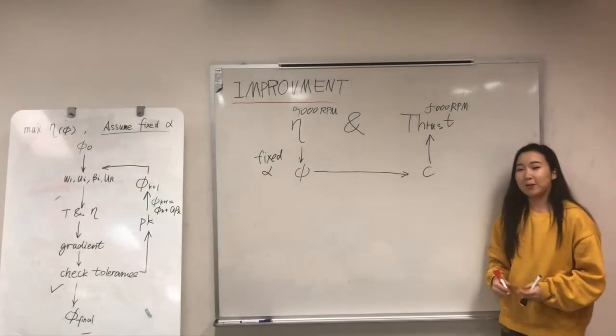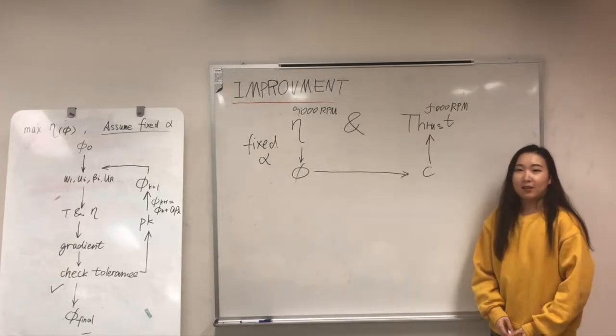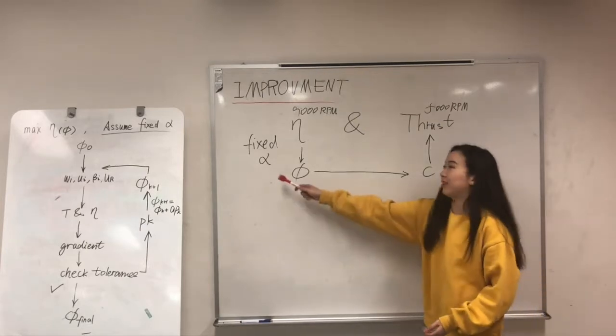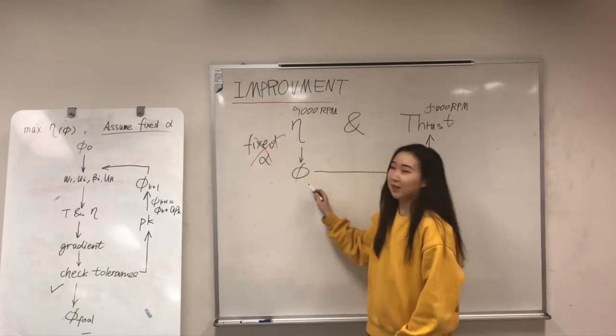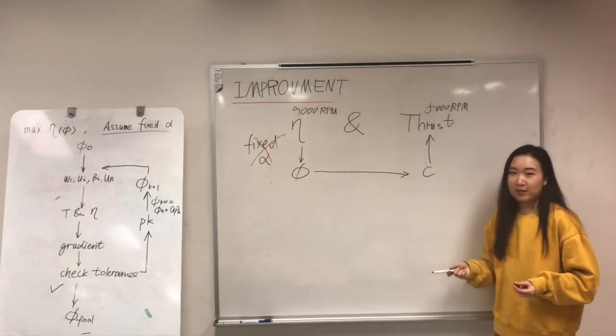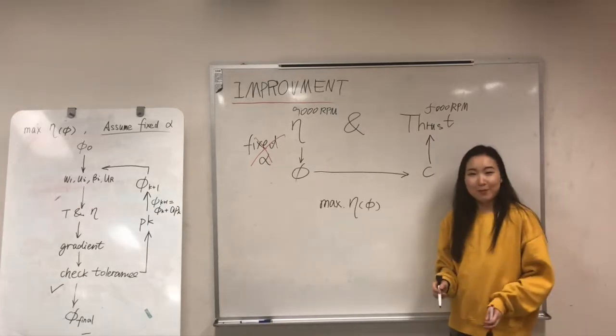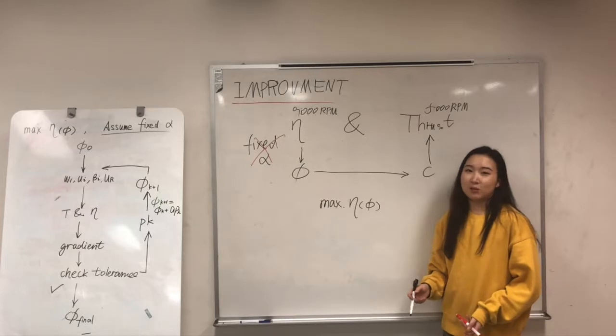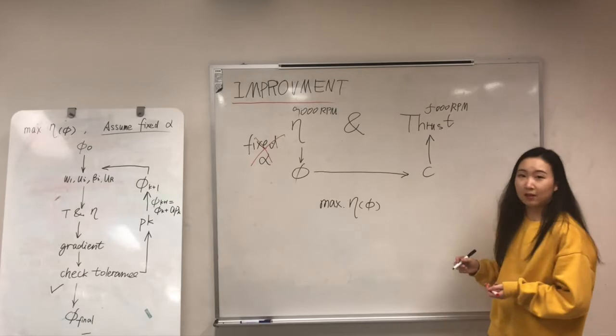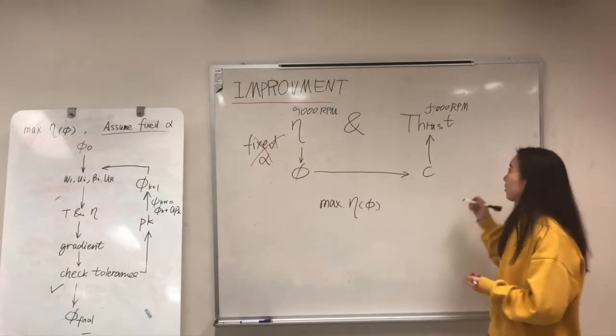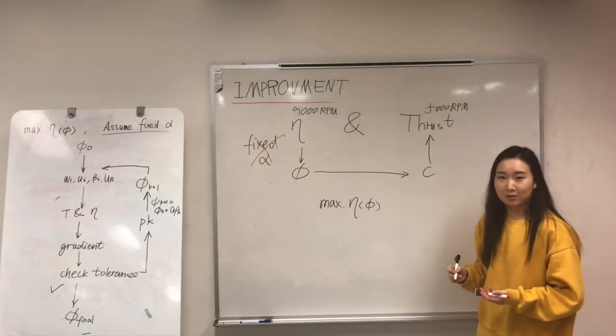If you look back to our original design process, there is actually some mistake. A problem actually happened here. It doesn't make sense to have a fixed alpha to calculate the twist angle. So in order to improve this process, we need to consider the efficiency and thrust together. Remember that when we did the optimization, we wanted to maximize the efficiency. But we did not consider anything about the thrust at that time.